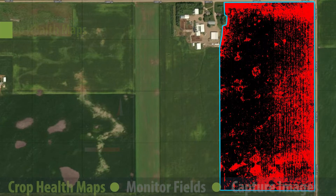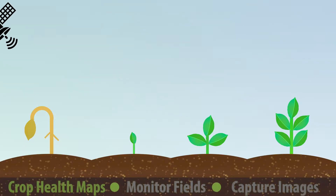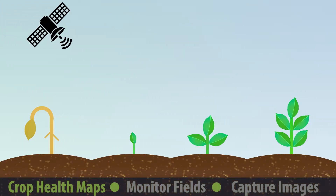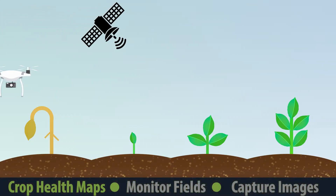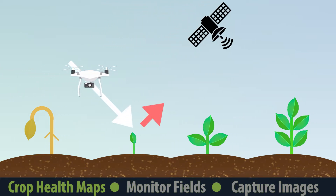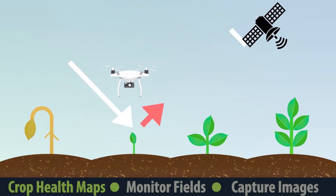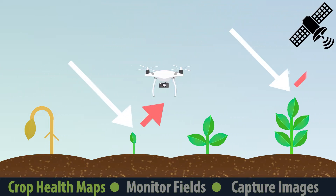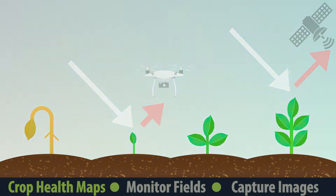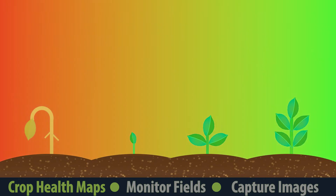To create a crop health map, sensors on drones and satellites capture light reflected off of plants. Generally, the more a plant reflects light, the more plant mass and better crop health it has. The maps generated from this imagery will typically visualize green as health and red as stress.